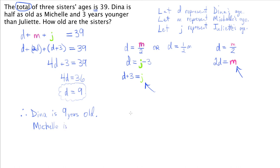And from here we can get Juliet's age and Michelle's age. Michelle is 2 times Dina or 2 times 9, which is 18. And Juliet is D plus 3 or 9 plus 3, which is 12. And we can check to make sure that this adds up to 39. And it does because 12 and 18 make 30, add the 9 is 39. And there you go. Always read the word problem piece by piece, write down what you know, define your variables, and work from there.